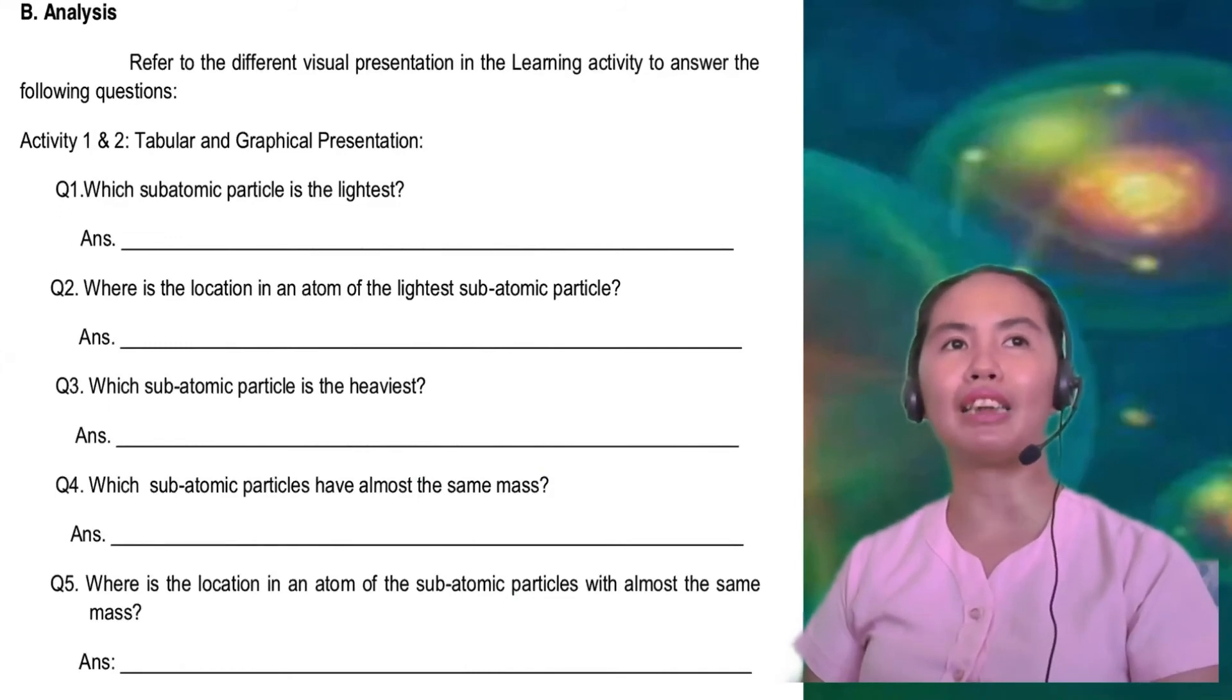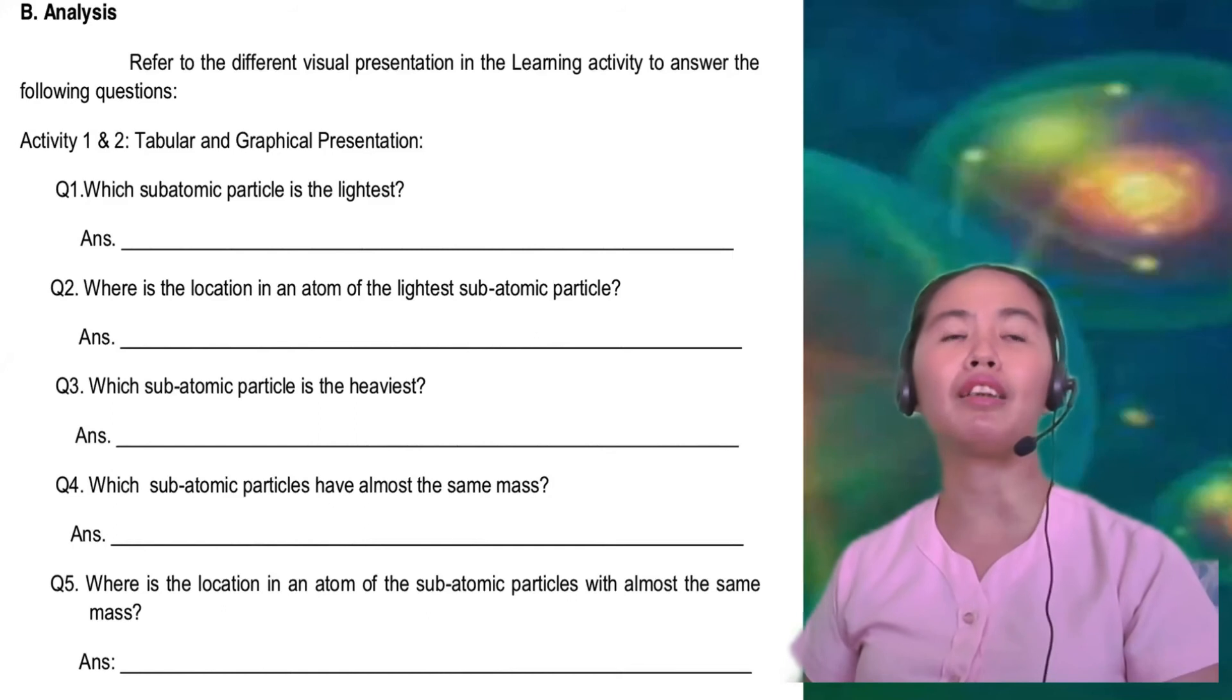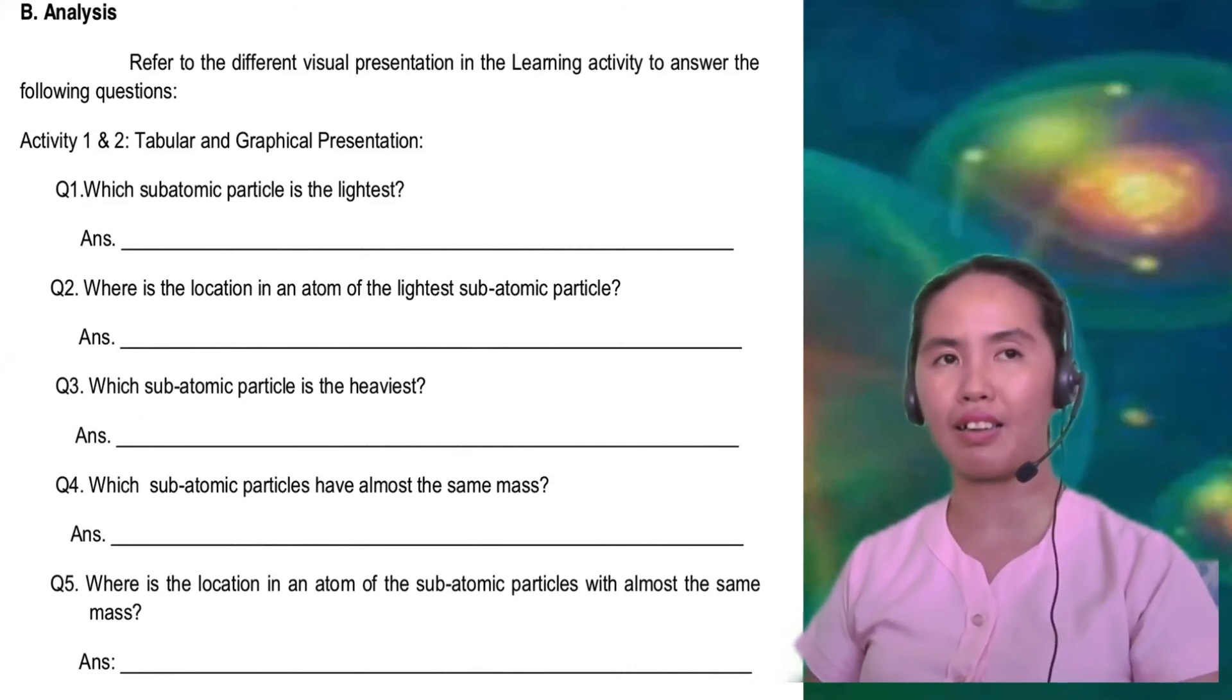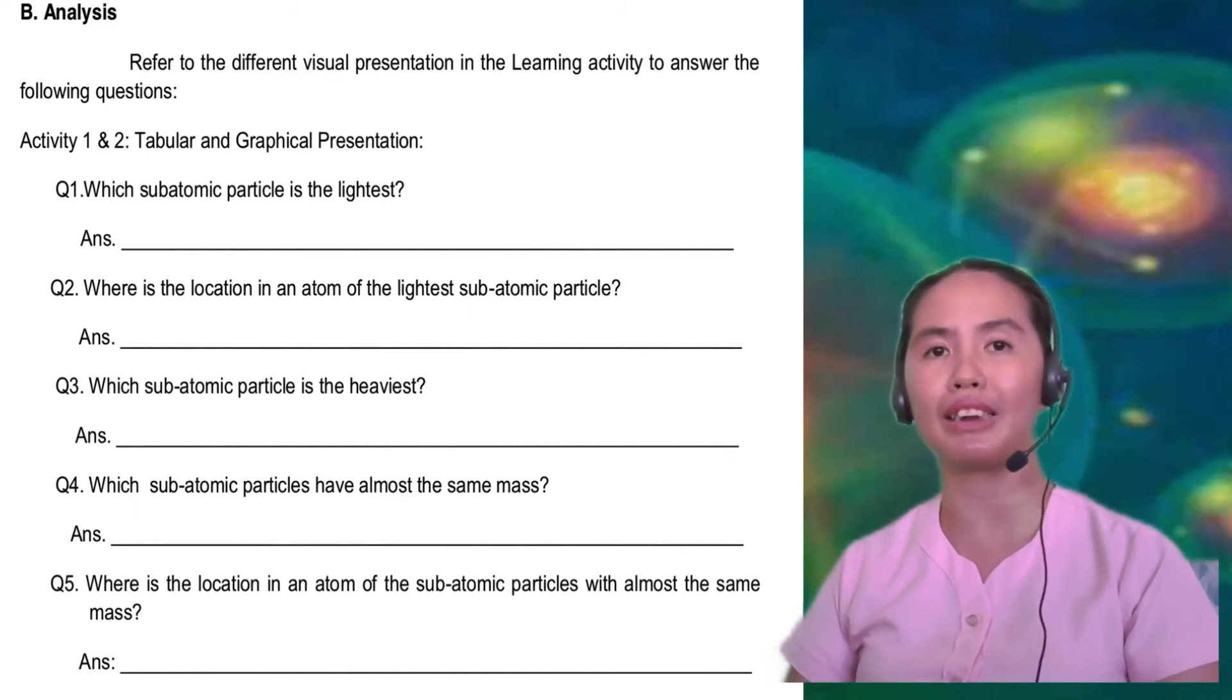After you are going to answer the questions on analysis, refer to the different visual presentations in the learning activity to answer the following questions. For activities 1 and 2, tabular and graphical presentation, question number 1, which subatomic particle is the lightest? Question number 2, where is the location in an atom of the lightest subatomic particle? Question number 3, which subatomic particle is the heaviest? Question number 4, which subatomic particles have almost the same mass? And for question number 5, where is the location in an atom of the subatomic particles with almost the same mass?